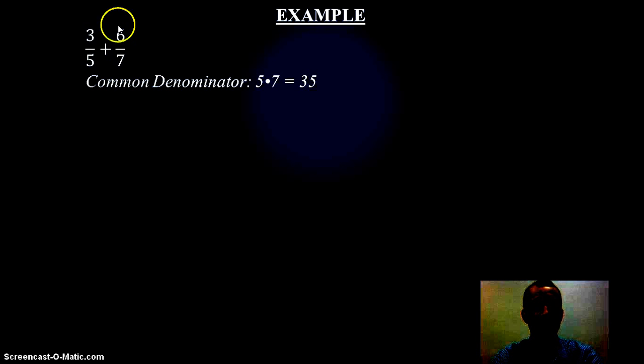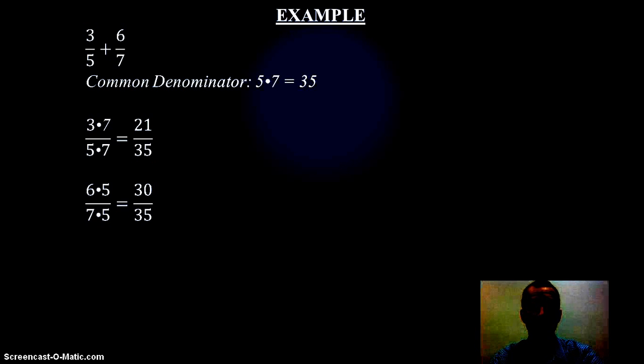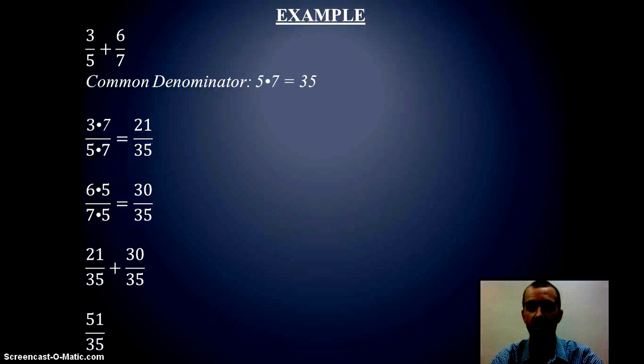Then we want to change each of our fractions to their equivalent fraction. So we get 3 fifths becomes 21 thirty-fifths, and 6 sevenths becomes 30 thirty-fifths. Now I'm going to add my numerators and keep my denominator, which gives me 51 thirty-fifths.